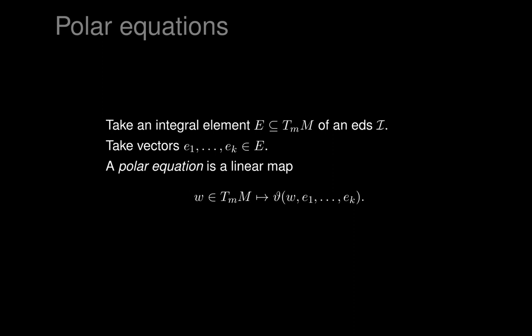A polar equation is a linear map given by taking any vector w in the tangent space and mapping it by plugging it into a differential form theta from the ideal I. We plug w in and fill the remaining slots with our vectors e_1 to e_k. So for a form of degree k+1, we plug w into the first slot and use our e's for the remaining slots. Think of w as the variable — theta and the e's are fixed — giving us a polar equation as a linear map on w, hence an element of the cotangent space.